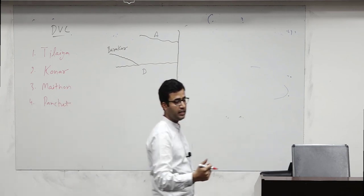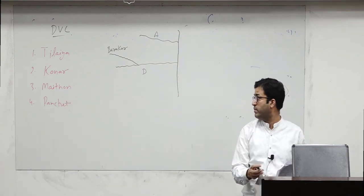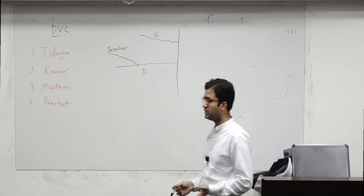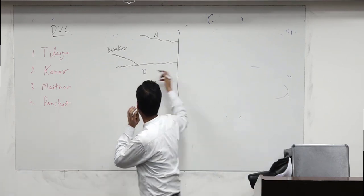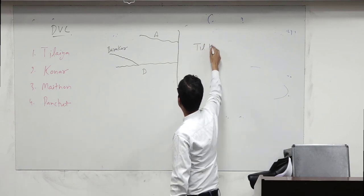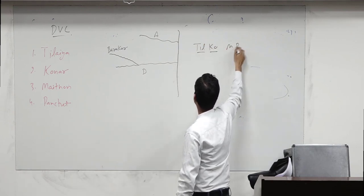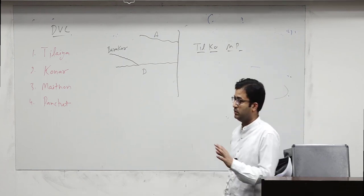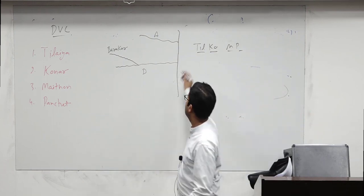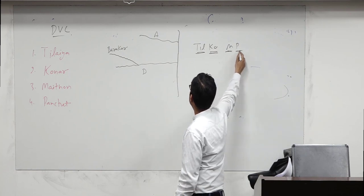Left to right, Tilaia, Konar, Mathon, Panchet. How I remember this? So that we will not get confused later on. Mnemonic, what I made? TKMP. What is TKMP? Tilaia, Konar, Mathon, Panchet.